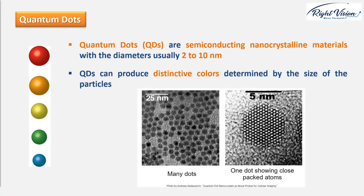Quantum dots are nanoscale nanoparticles, or in other words they are nanocrystals of semiconducting materials. They usually have diameters in the range of 2 to 10 nanometers, around 10 to 50 atoms. They were first discovered in 1980, and they display unique electronic properties intermediate between those of bulk semiconductors and discrete molecules.